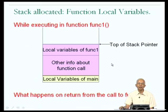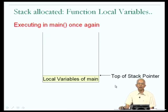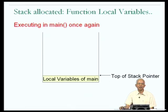If I looked at the stack during the execution of func1, there would be local variables of func1 as well as local variables of main, all available on the stack. When func1 returns — when you come to the end of func1 — then the information on the stack related to func1 can be removed, and we are back to the situation as it was in main before func1 was called. So this is a simple picture illustrating the idea of stack allocation for function locals and parameters.